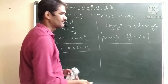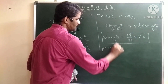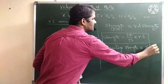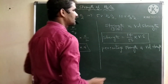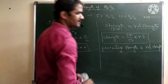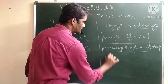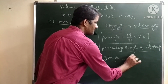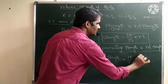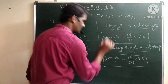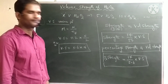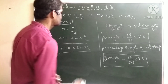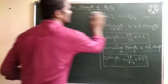Next, percentage strength versus volume strength. The relation here is: percentage strength = (17/5.6) × volume strength. So these are the various relations for volume strength with molarity, normality, strength, and percentage strength. Now we will discuss some numericals based on volume strength calculations.